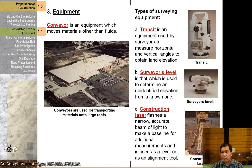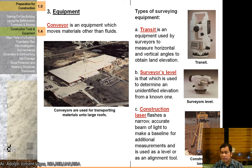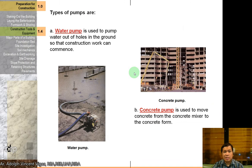For equipment, a conveyor moves materials other than fluids. A transit is a type of surveying equipment used to measure horizontal and vertical angles and obtain land elevation, and will be discussed further in your surveying subjects. A surveyor's level is used to determine an unidentified elevation from a known one. A construction laser flashes a narrow, accurate beam of light to make a baseline for additional measurements, and is used as a level or alignment tool.